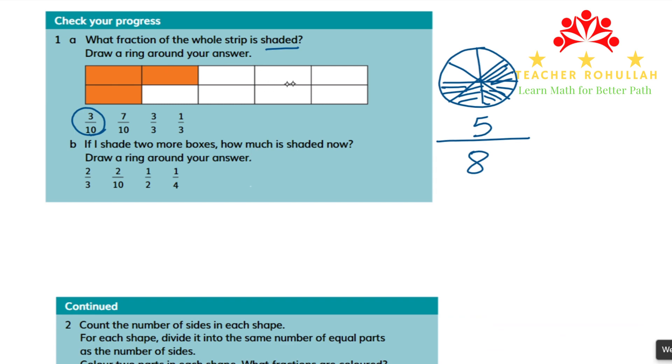The same thing over here. We counted the number of equal parts, which is 10, and counted the number of parts which are shaded. So the fraction made from this shape is three-tenths.